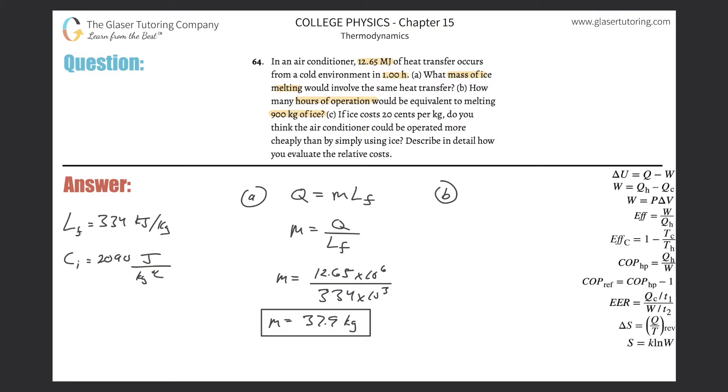So basically the first thing to do is to find the heat transferred from melting 90 kilograms of ice. So again, it's the same formula, M times latent heat of fusion. So the Q here will now be 900 multiplied by 334 times 10 to the 3rd.